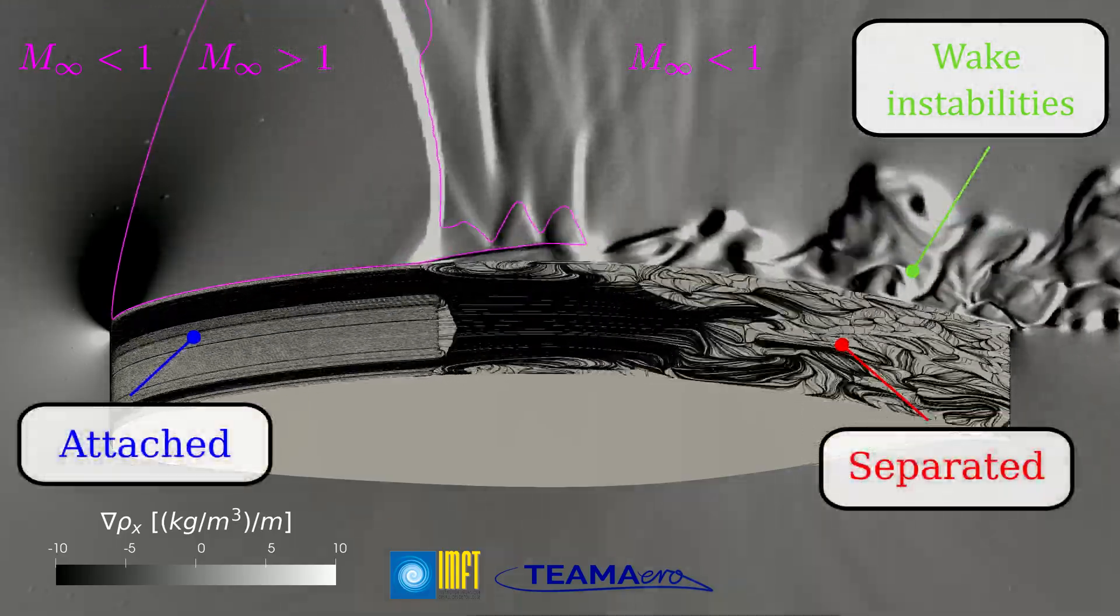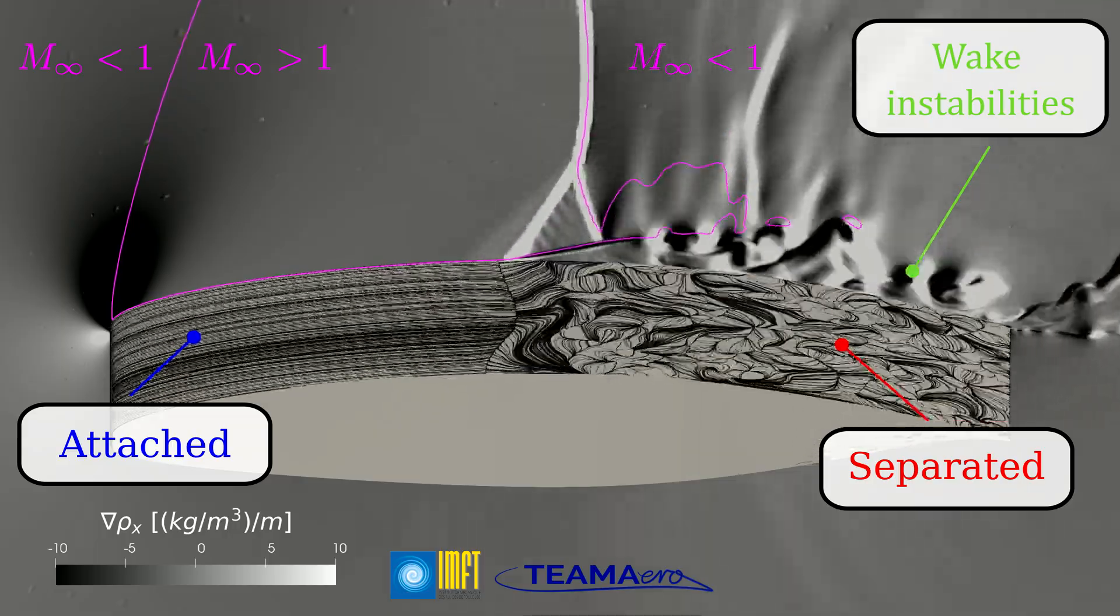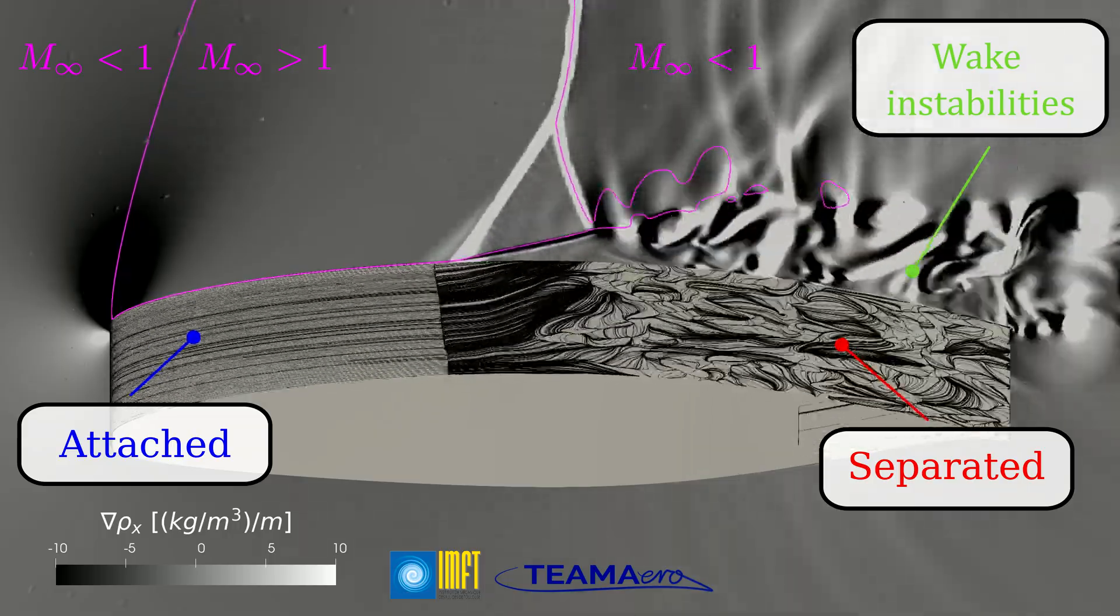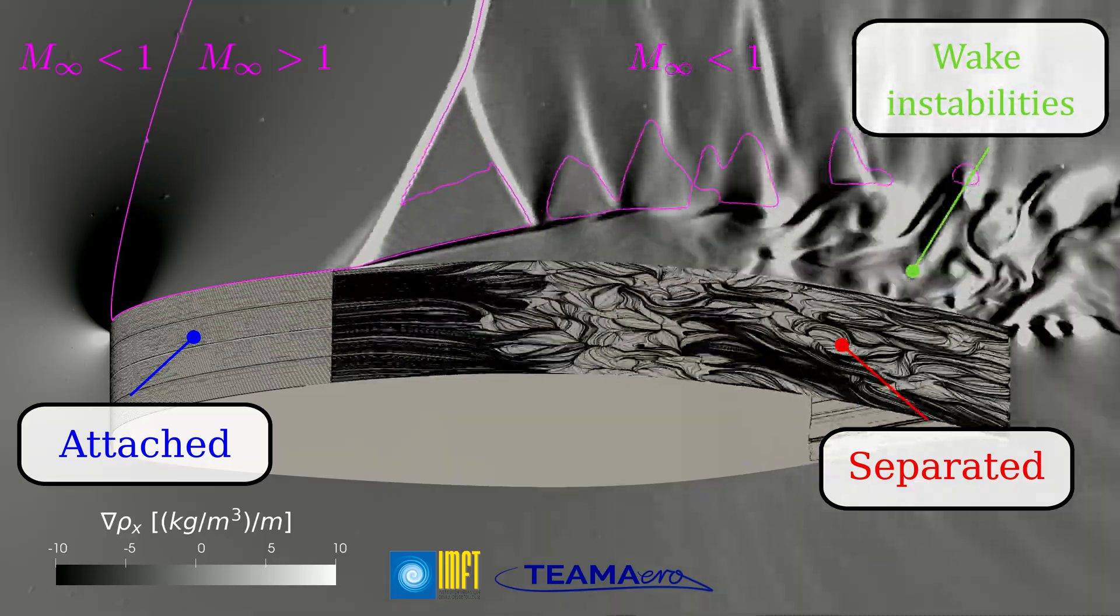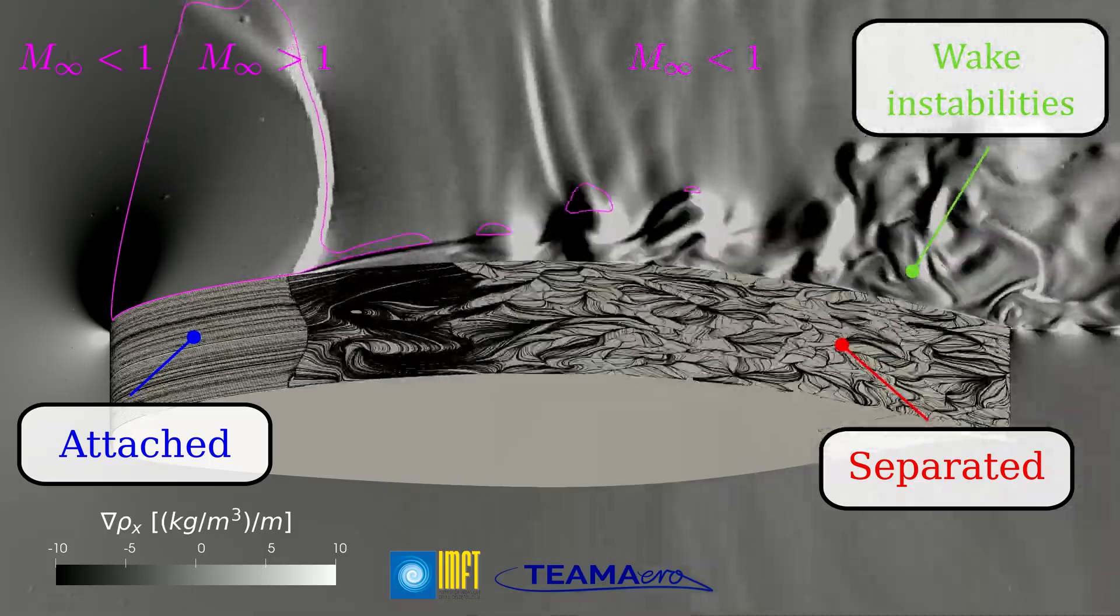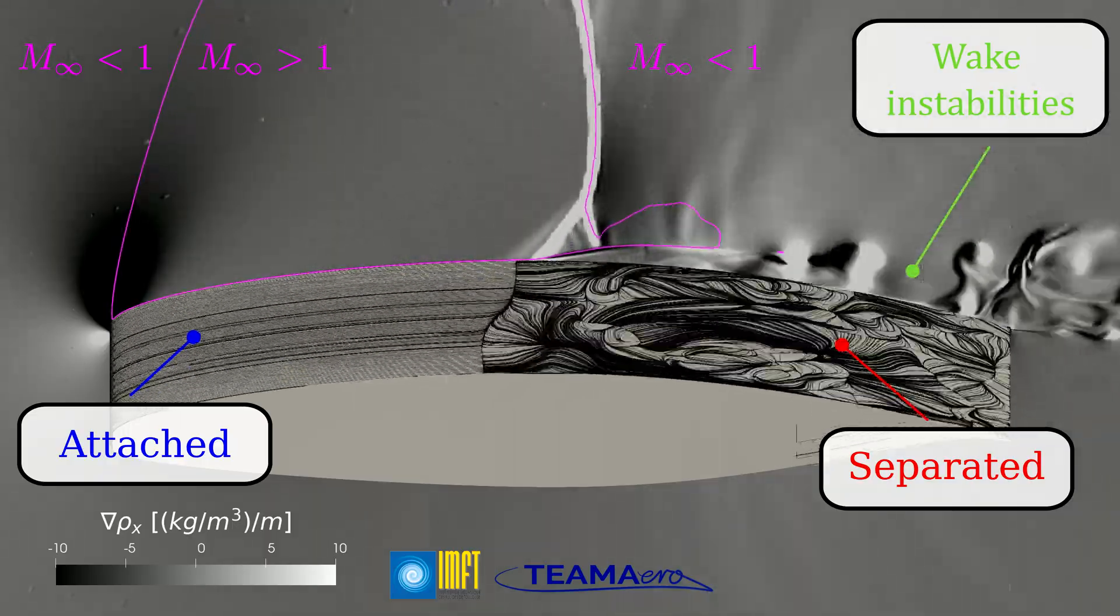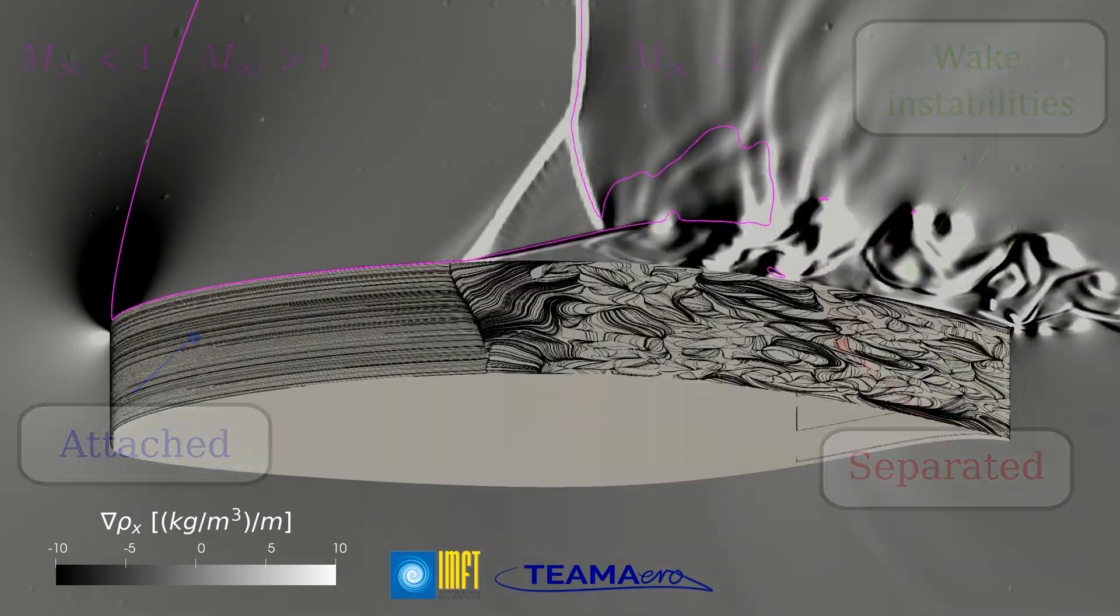By looking at the skin friction patterns, we can observe how the flow is initially attached over the airfoil surface until the shock-induced separation point. After this, the flow is detached and a big zone of recirculation is formed downstream the shock wave. One can observe how the extension of these zones evolve in a cyclic way due to the upstream and downstream movement of the shock wave.